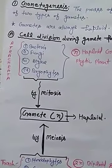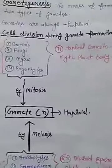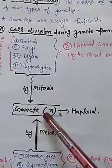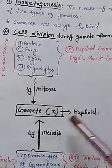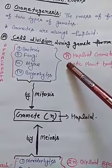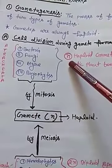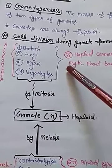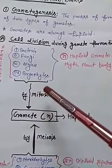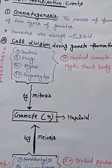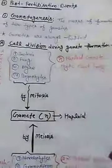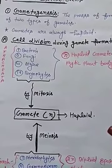To form gametes from the haploid gametophytic plant body: we know that gametes are always haploid and the ploidy of gametes is N, and the ploidy of the organism from which we form the gamete is also N. So in a haploid plant body, if gametes are formed, the division responsible is mitosis. Haploid organisms — bacteria, fungi, algae, and bryophytes — produce gametes by mitotic division.